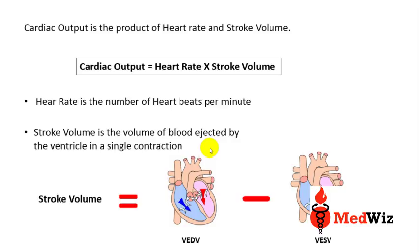Ventricular end systolic volume is the residual or remaining blood in the heart at the end of systole. So if you subtract those volumes, you get the net volume ejected by the ventricle in a single contraction. In other words, stroke volume is the volume of blood ejected by the ventricle in a single contraction — this is what is demonstrated by this formula.